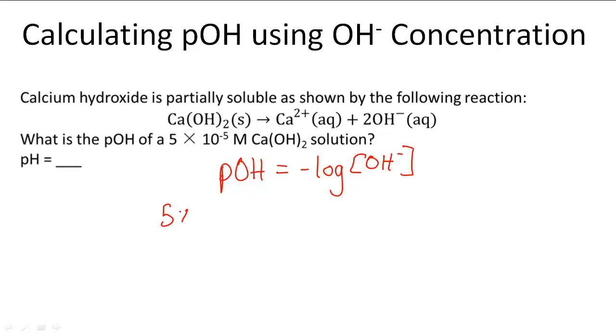When I multiply 5 times 10 to the negative 5th power times 2, I get 1 times 10 to the negative 4th molar concentration of OH negative.